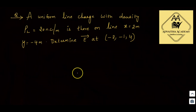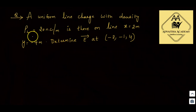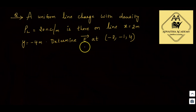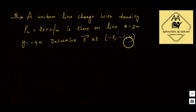A uniform line charge with line charge density rho L equal to 20 nano coulomb per meter is located on the line x equal to 2 meters and y equal to minus 4 meters. Determine E bar at the point (minus 2, minus 1, 4).